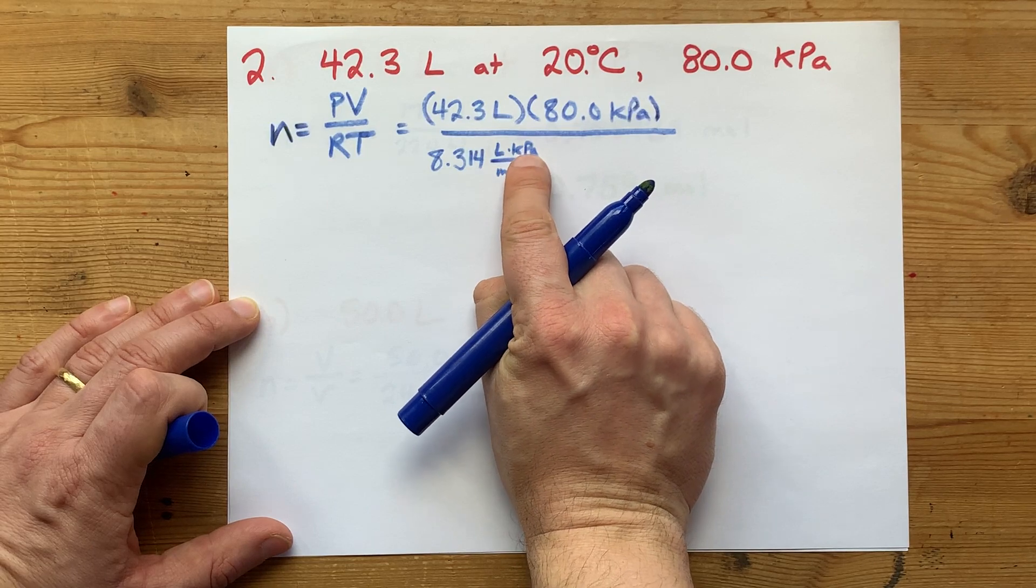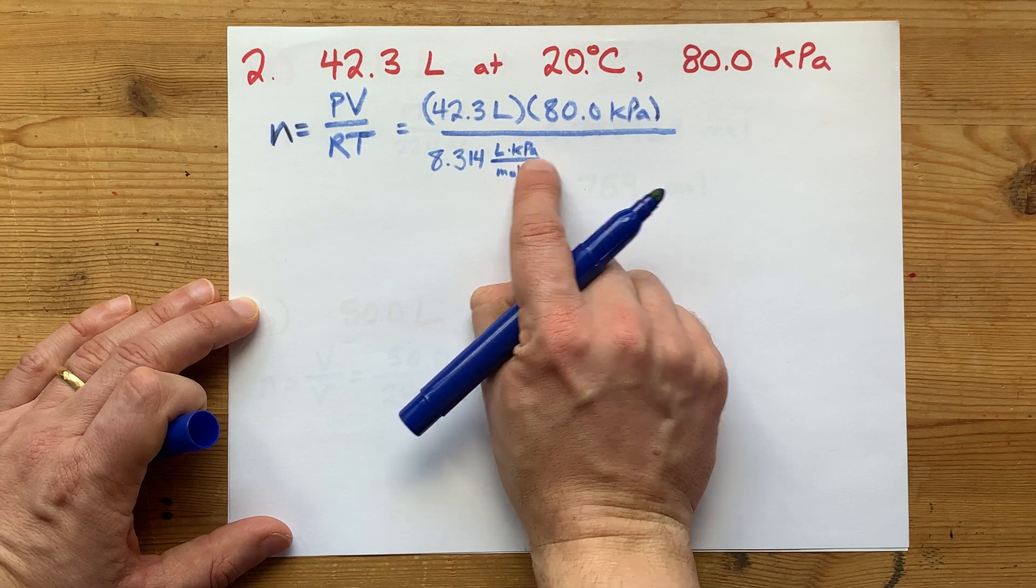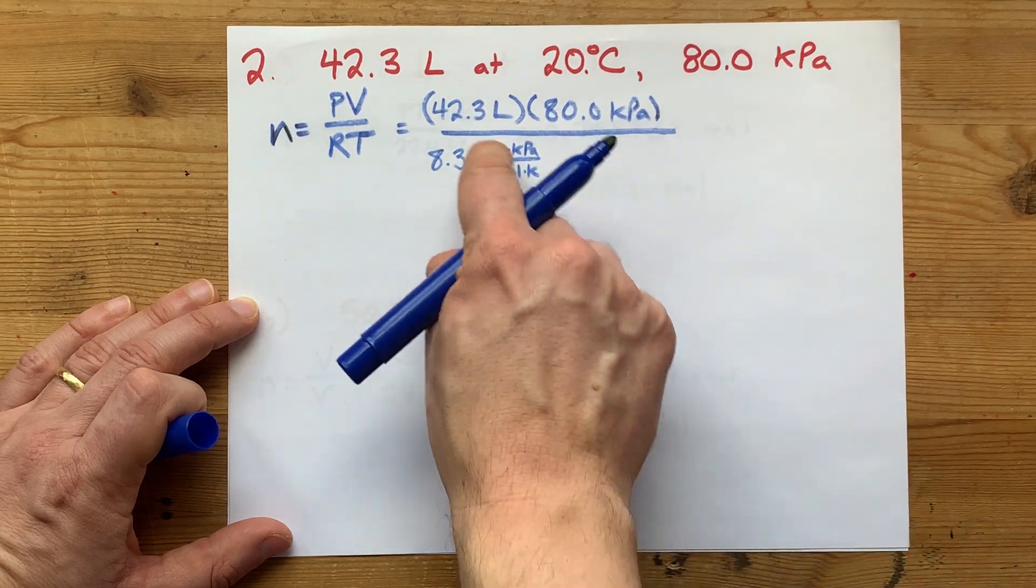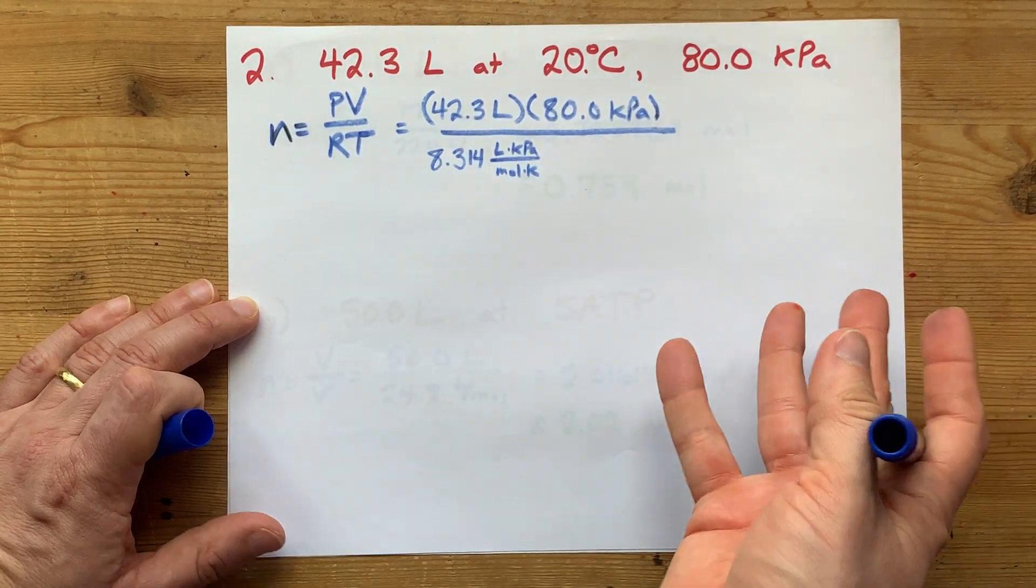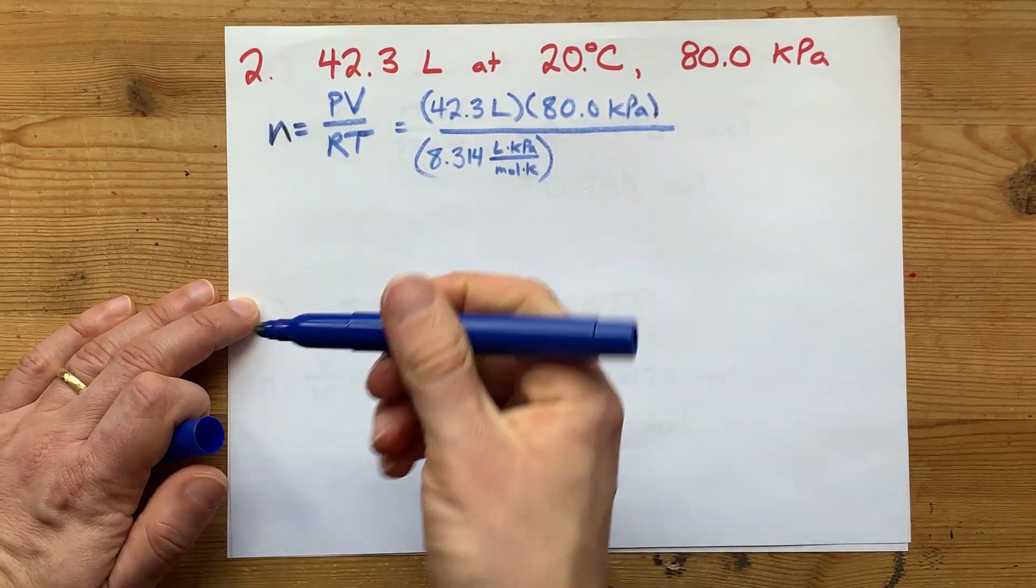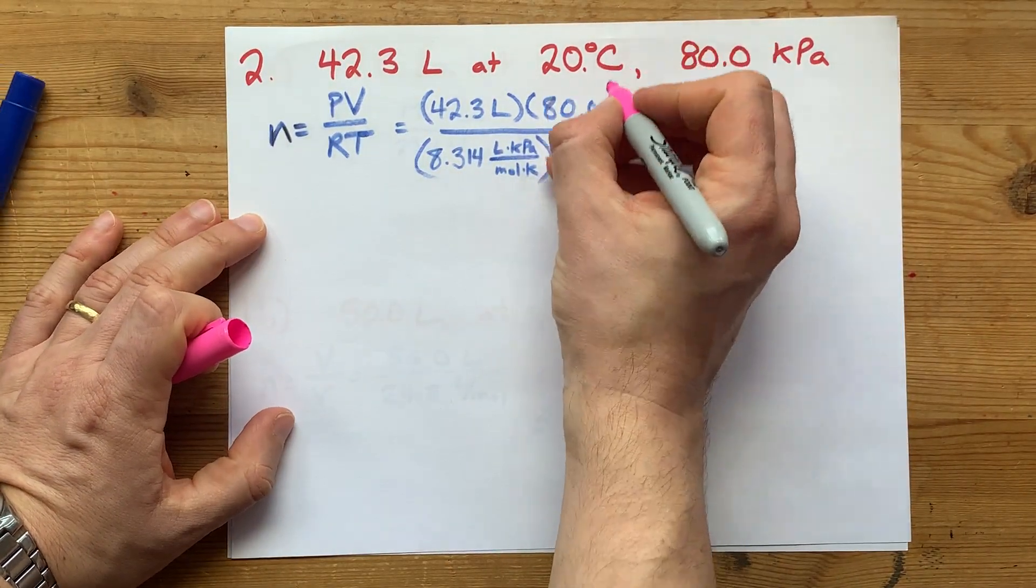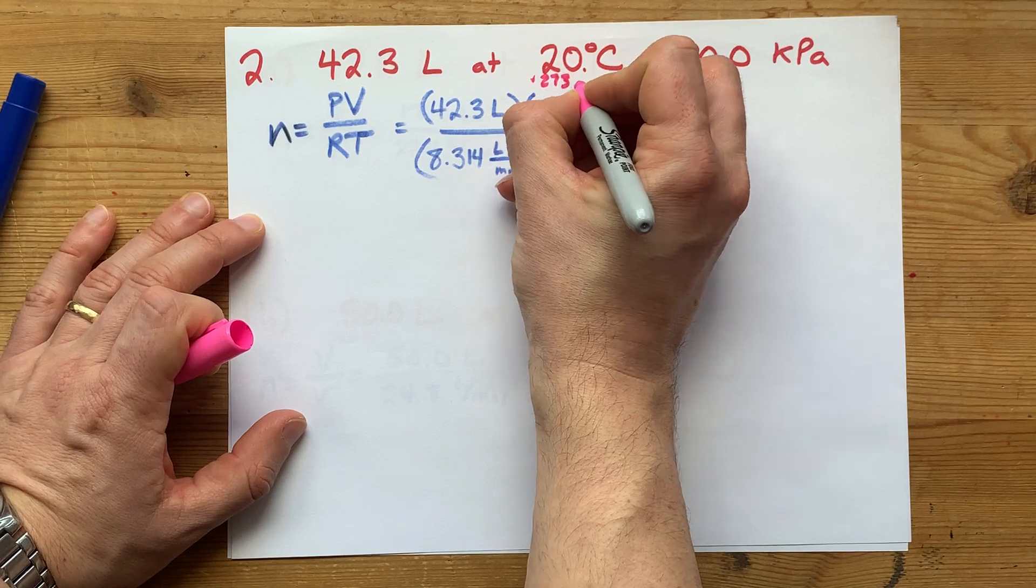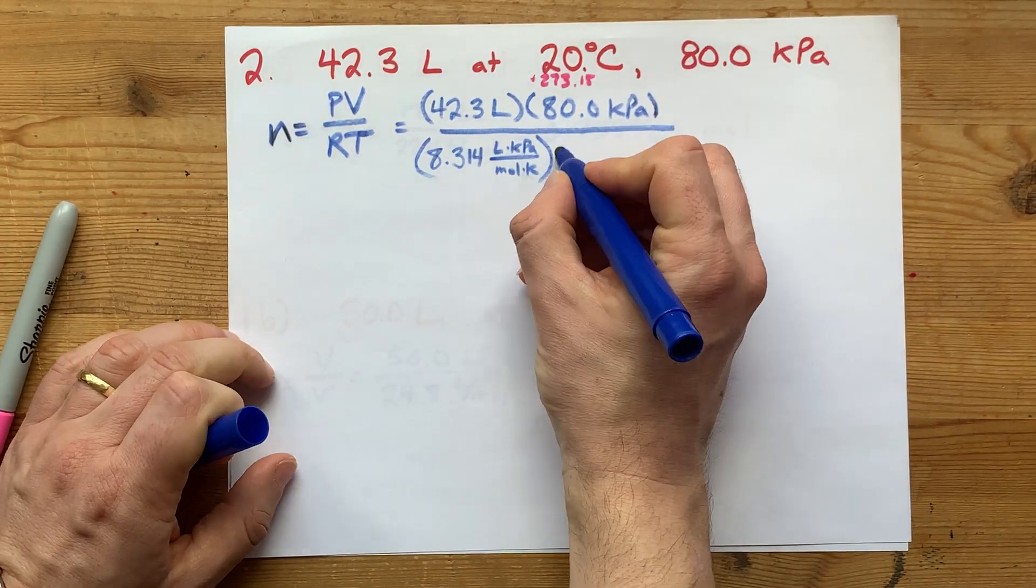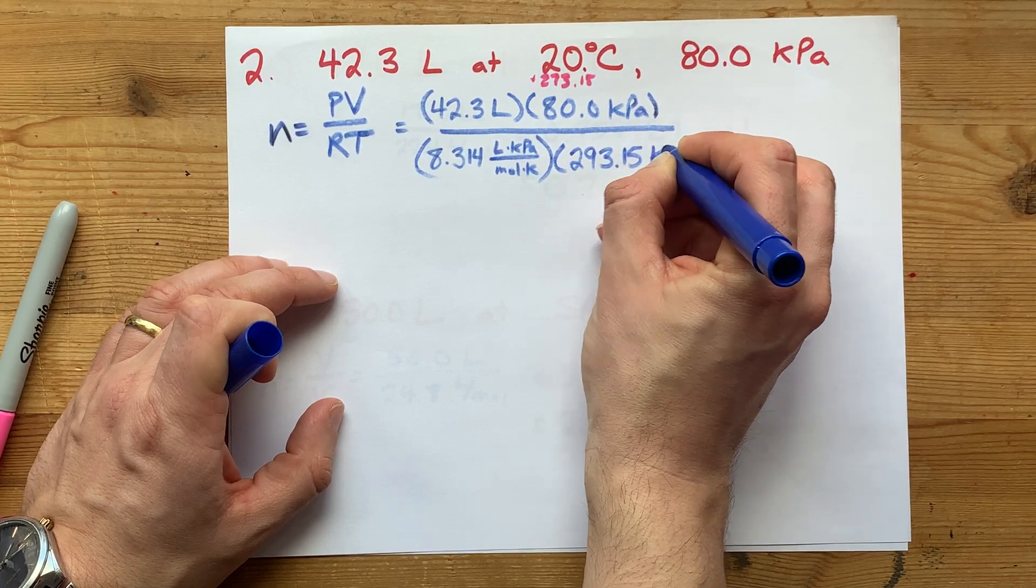If your constant has atmospheres or torr and you were given a different unit, you'll need to convert to match your R value. Lastly, I need temperature in Kelvin. For this I do need a conversion. To convert Celsius to Kelvin, add 273.15. So my temperature is 20 plus 273.15 equals 293.15 Kelvin.